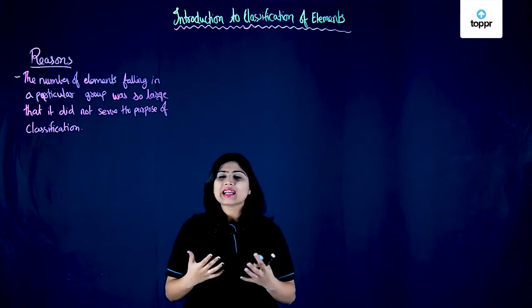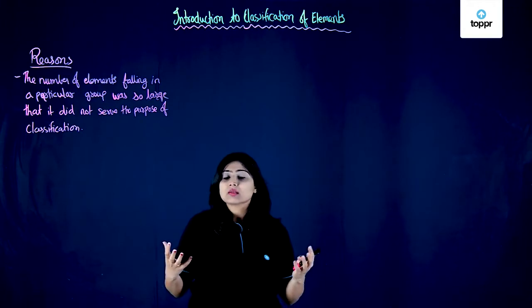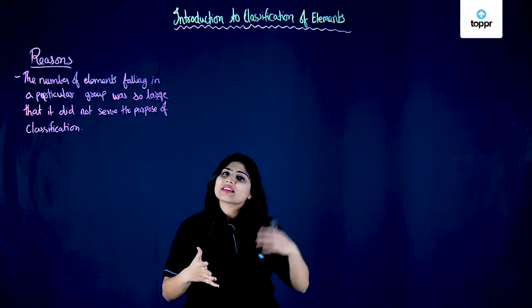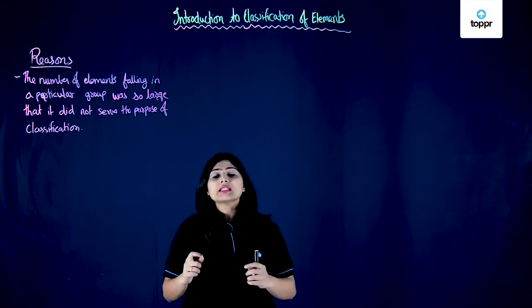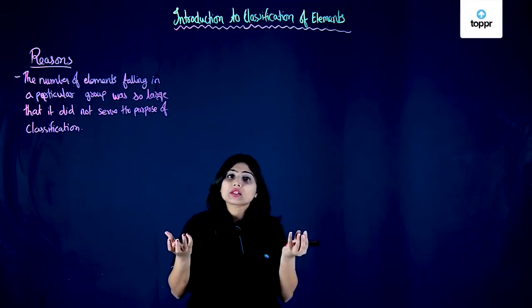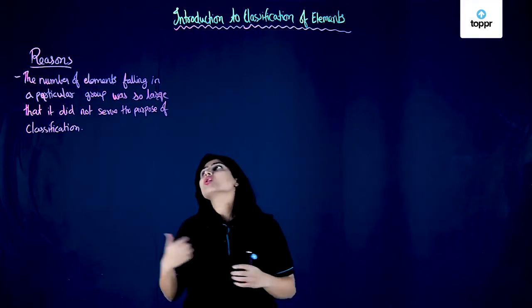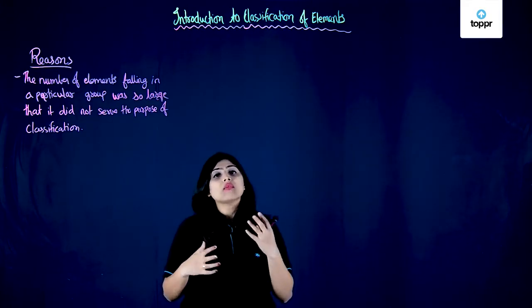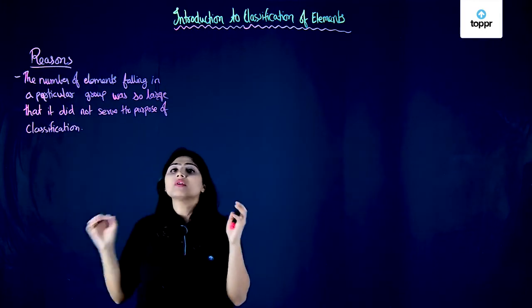Let's see what were the reasons behind classifying elements. Initially, scientists had started grouping elements according to their physical properties like melting point, boiling point, and density. Suppose elements having high melting point and boiling point were categorized as one group and others in different groups. But this did not serve the purpose of classification because in one particular group there were so many elements and in another group there were only a few. The number of elements falling in a particular group was so large that it did not serve the purpose of classification.